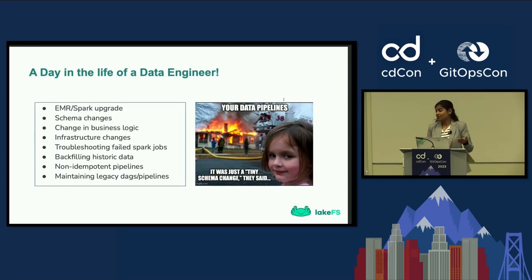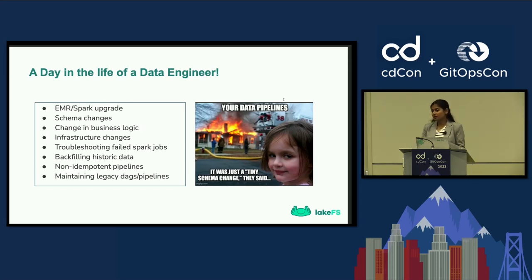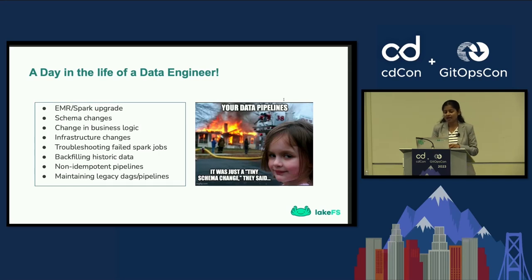What are those changes that might break your pipeline? It could be anywhere from an EMR upgrade or Spark version upgrade you're trying to do, or any infrastructure changes coming up — migrating from Snowflake to BigQuery and whatnot. Or sometimes it comes from the business side, where your marketing team has updated the definition of a KPI they've been tracking, and now you suddenly have to rerun your entire data pipeline to arrive at new metrics or to backfill that KPI for all historic periods.